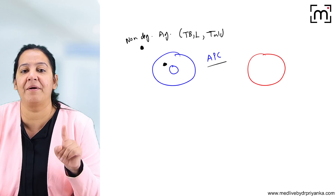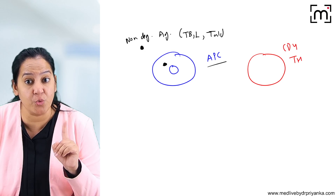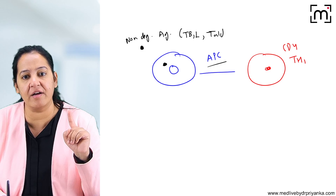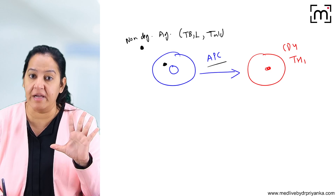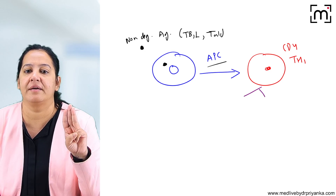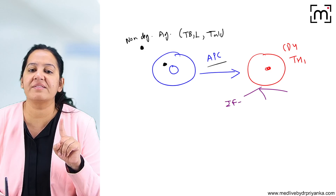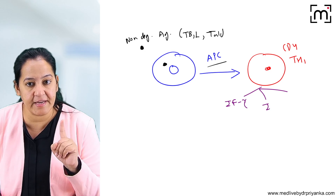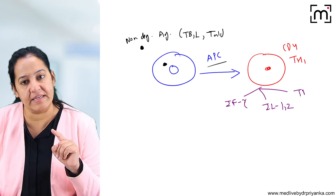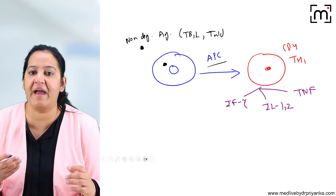The next cell is the helper TH1 cell — CD4 lymphocyte, helper TH1, not TH2. The APC gives the signal that there is a non-degradable antigen in the body. This cell gets stimulated and on stimulation it secretes three cytokines: number one, interferon-gamma; number two, interleukin 1 and 2; and number three, TNF. These are the three cytokines secreted by helper TH1.